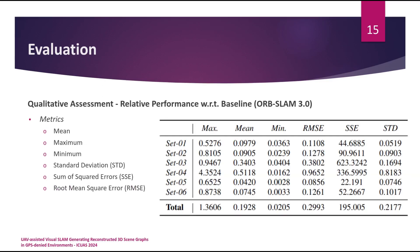In the next slide, you can also see the qualitative assessments. For this evaluation, we calculated the performance of the proposed method with respect to its baseline, Orb SLAM 3. The metrics used are mean, maximum, minimum, standard deviation, sum of squared errors, and root mean squared errors. According to the table data, there are no significant differences between the pose estimated using the framework and those estimated by the baseline. This actually means that the framework is able to maintain the accuracy of the baseline, while adding new valuable information to the reconstructed maps.